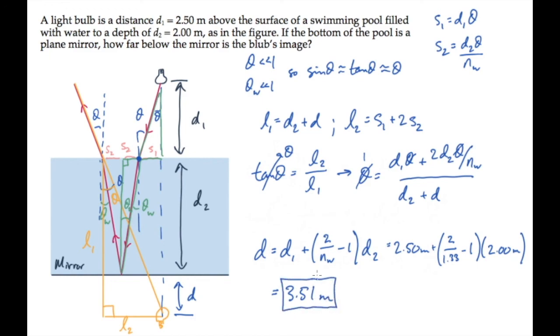If there was no water in the pool, the image would have formed at the larger distance d1 plus d2. So the water reduced the distance to the image.